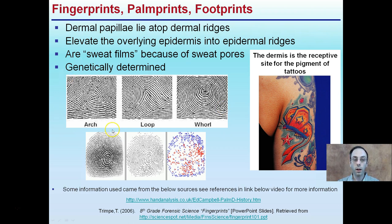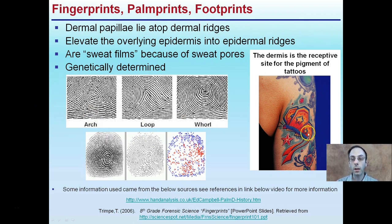We're going to look at a couple of the key different types. There are three main classifications: arches, loops, and whorls. We'll be able to identify these in greater detail. Just for those thinking about getting a tattoo — since we're talking about skin — the dermis is the receptive site for the pigment of tattoos. So a little bit deeper down, we're focusing on how this dermal layer impacts the shape or the bridges that occur on the surface.